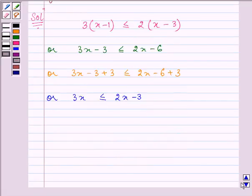Now, on subtracting 2x from both sides, we have 3x - 2x ≤ 2x - 3 - 2x.